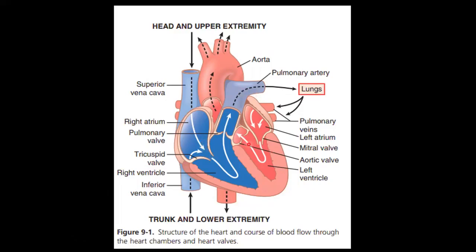The heart has four chambers — two atria and two ventricles. The right atrium receives blood from the superior and inferior vena cava and it goes to the right ventricle, then to the pulmonary artery and to the lungs. Then oxygenated blood comes through the four pulmonary veins to the left atrium and left ventricle, and then passes to the whole body through the aorta.